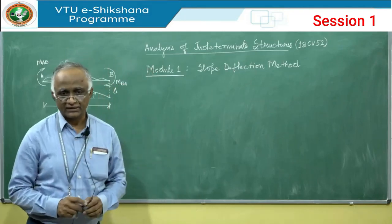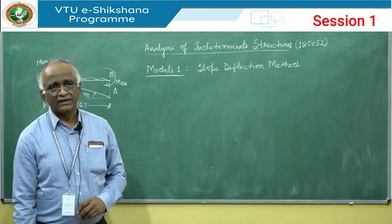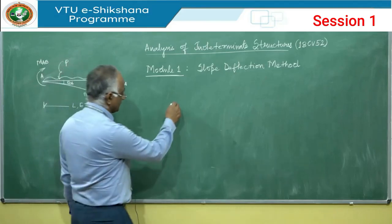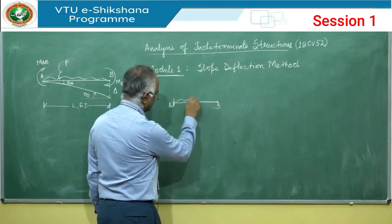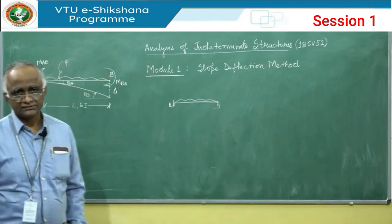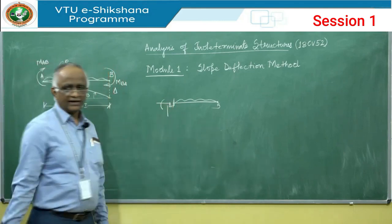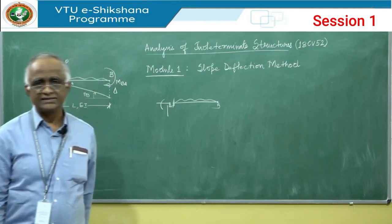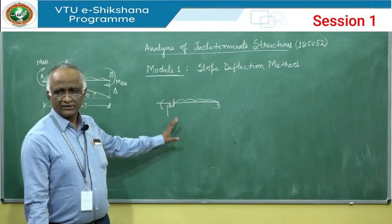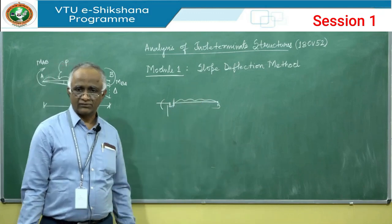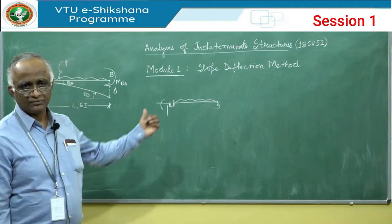A determinate structure is one where you can completely solve all structural parameters by using only the equations of equilibrium. For example, take a simple beam or cantilever beam subjected to any type of load. The reactions are only 3: at the fixed end — horizontal, vertical, and reacting moment. Since we have 3 conditions of equilibrium for any 2-dimensional structure, I can completely analyze these reactions, and from them find shear force, bending moment, and stresses.